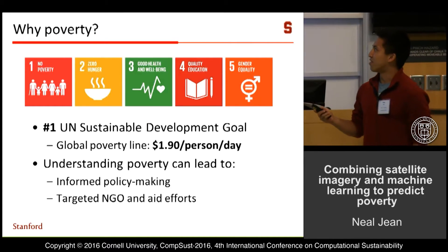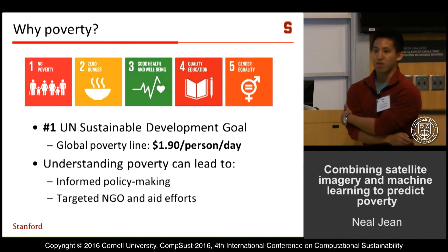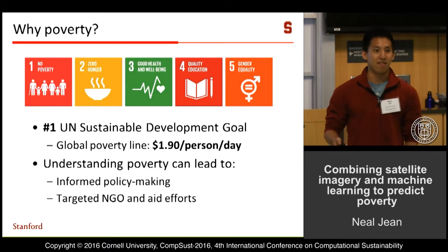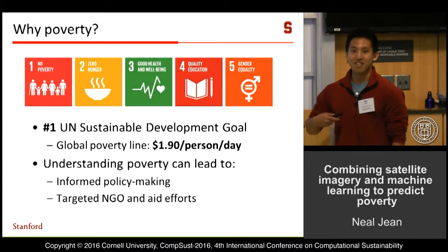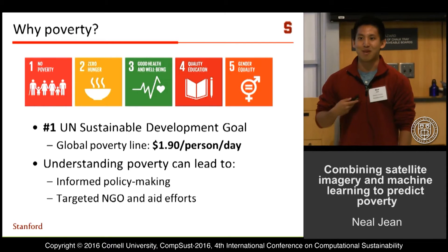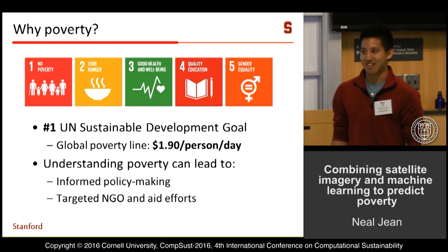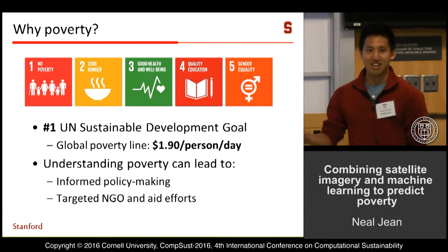We've already motivated this problem so I'm not going to spend too much time on this. Basically, poverty alleviation is the number one UN sustainable development goal. The thing I really want to emphasize is that the global poverty line is now at a dollar and ninety cents per day. I'm a grad student — I often spend more than that on something as trivial as doughnuts. So it's not very much money.